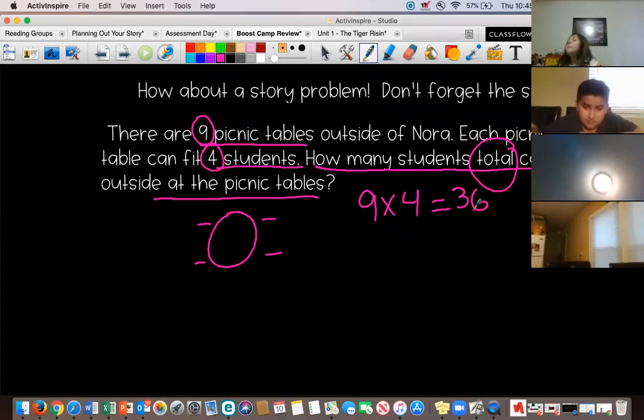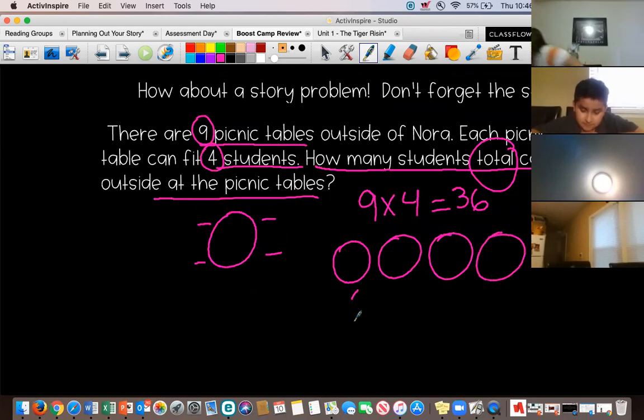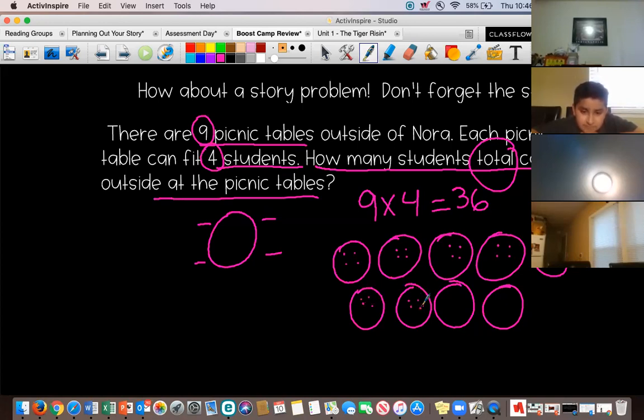The circles. All right, so you drew how many circles? Nine. All right. And then what? I put four in each of them. You did four dots. And then what did you do to get the answer? I counted all the dots.